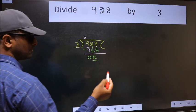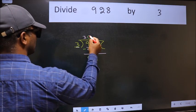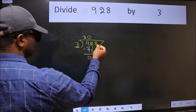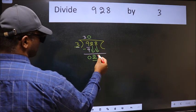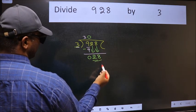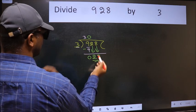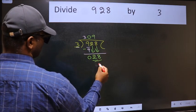And the rule to bring down the second number is we should put 0 here. Then only we can bring this number down. Now 28. A number close to 28 in the 3 table is 3 nines, 27.